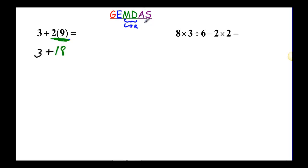Now we've done all the multiplication and division and we're ready to do the addition and subtraction. Again, you do this from left to right. So we just have one addition here: 3 plus 18 is going to be 21.